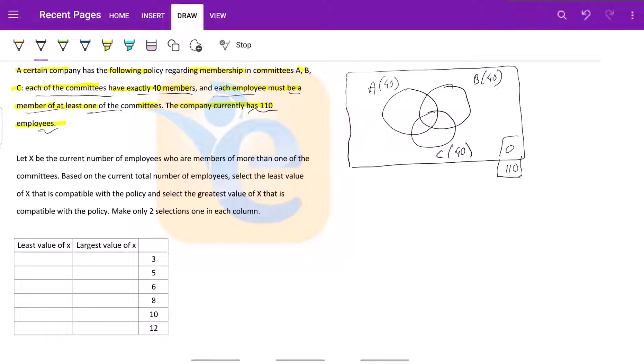So this outside region, this is 0, none of the employee is here. Now what is our question? Let X be the current number of employees who are members of more than one of the committees. So basically referring to this region where a person is a member of more than one committee. So this blue region is X.